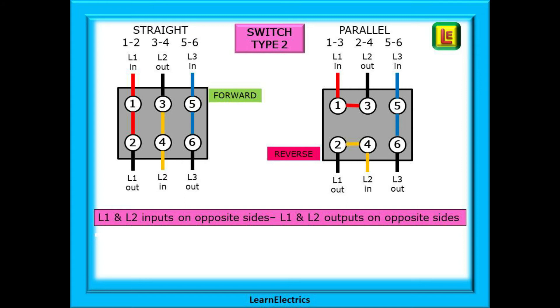In this example, when in reverse, pin 3 or L2 out becomes the red phase, and pin 2 or L1 out is the yellow phase. So long as the two phases change over, the motor will turn in the opposite direction.